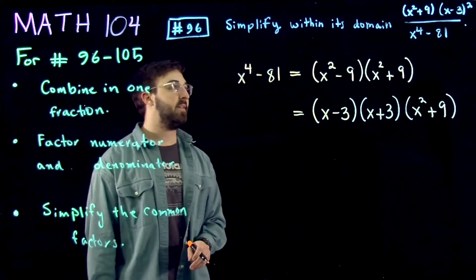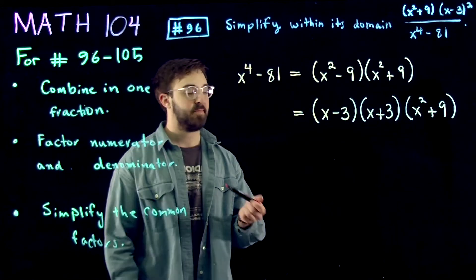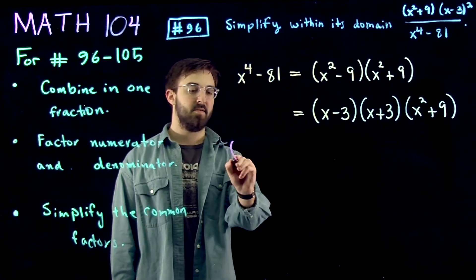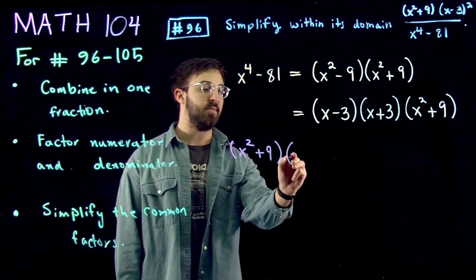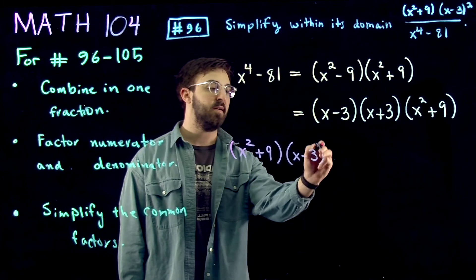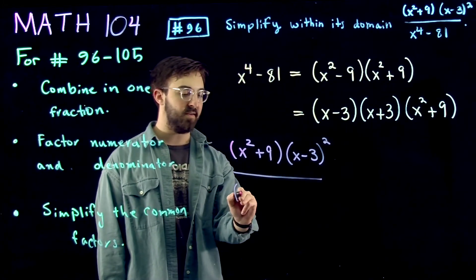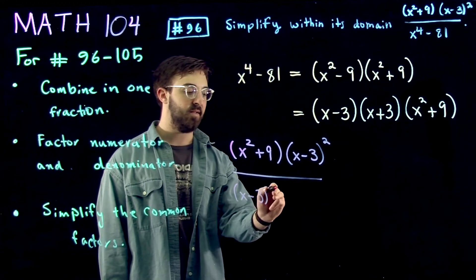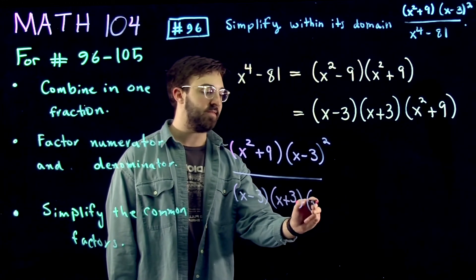So let's go back to the full expression here. So we've got x squared plus 9 times x minus 3 squared, all over the denominator, which is now factored, and it's x minus 3 times x plus 3 times x squared plus 9.